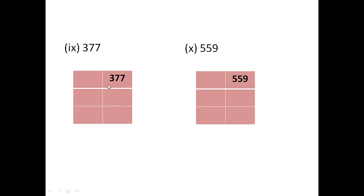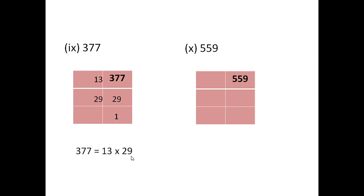Then the next prime number after 11 is 13. You have to divide 377 by 13 and check whether it is divisible or not. When you actually do the division by 13, you will find 13 is the factor of 377 and you will get 29 as the quotient. Now, 29 is a prime number. So, the next factor will be 29. Therefore, 377 is 13 multiplied by 29.